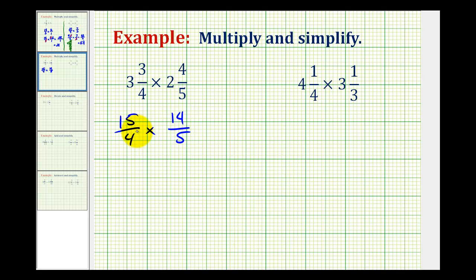A nice way to keep your work organized, and to make sure you identify all the common factors, is to rewrite each numerator and denominator as a product of primes. Meaning we could rewrite fifteen as five times three, we could rewrite four as two times two, fourteen is the same as two times seven, and five is a prime number.